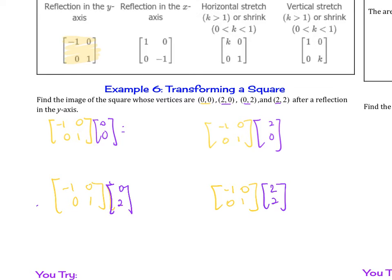So remembering how to multiply, it's the row by the column. So this is going to be: negative 1 times 0 is 0, and 0 plus 0 is going to be 0. This is the same here. 0 times 0 is 0, 1 times 0 is still 0.